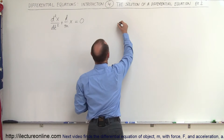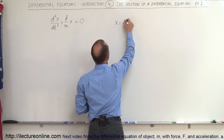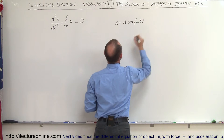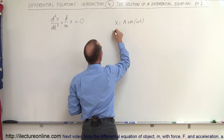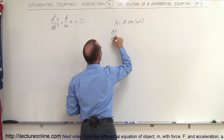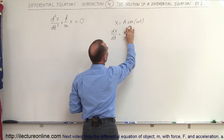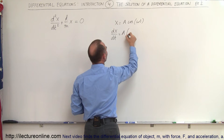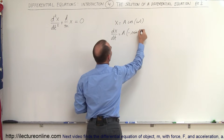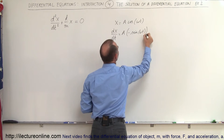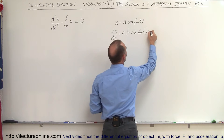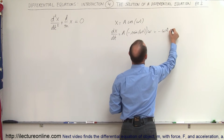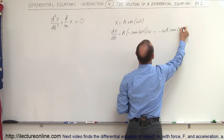For example, if x is equal to A times the cosine of omega t, and I take the derivative of that, dx/dt will equal — the derivative of cosine is negative sine — so it would be A times the negative sine of omega t, times the derivative of the angle which is omega. This gives minus omega times A times the sine of omega t.